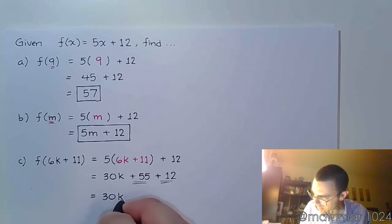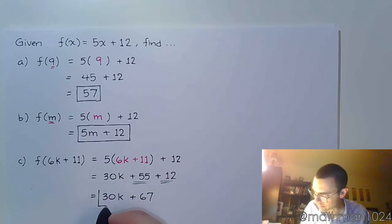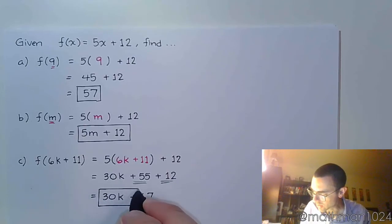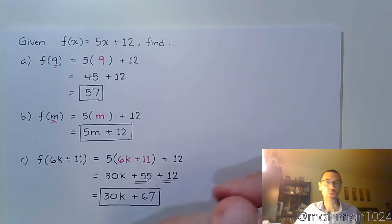So I have 30k, 55, and 12, which will give me 67. So what we're seeing is that we can plug other variable expressions into these functions and get another variable expression. Again, you're not solving anything. There's nothing here that says solve for k or solve for x. It's just replace x with this expression and work it out.